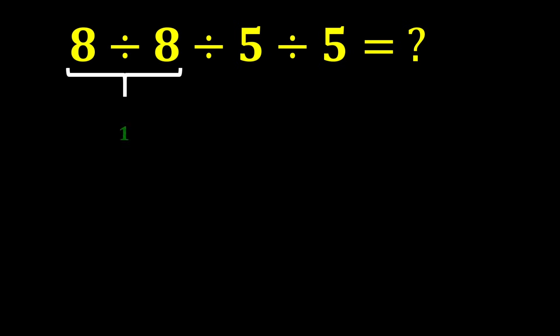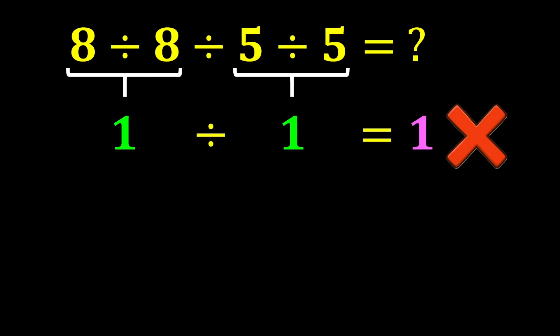Eight divided by eight gives us one, and five divided by five gives us one. In the end, one divided by one gives us one. But this answer is not correct because we did not follow one of the most important rules in mathematics.